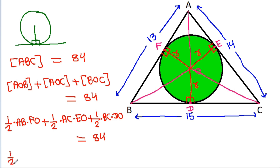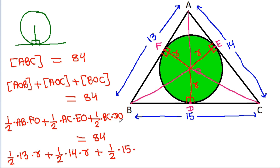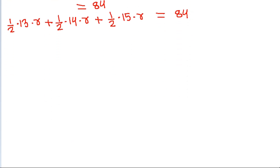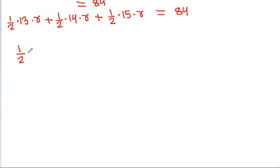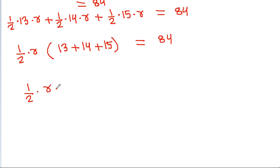And it is (1/2) times AB which is 13 times FO which is R, plus (1/2) times AC which is 14 times EO which is R, plus (1/2) times BC which is 15 times DO which is R, equals 84. We can factor out (1/2) times R, giving us (1/2) times R times (13 plus 14 plus 15) equals 84, and that is (1/2) times R times 42 equals 84.